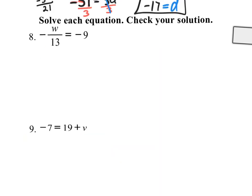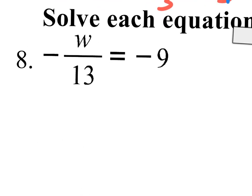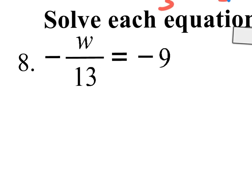Let's move on. Number 8 and 9 are both already simplified — there's nothing to simplify. All you have to do is worry about getting the variable by itself on one side of the equal sign. Any fraction, you can get rid of by multiplying everything by the denominator. This really does say W divided by 13, so if you don't want this divided by 13, get rid of it by multiplying by 13.